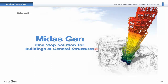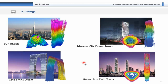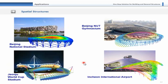Looking at the applications of Midas Gen, we see Burj Khalifa, which was used for column shortening analysis. Moscow City Palace Tower was completely analyzed and designed in Midas Gen. Gate of the Orient and Gangsa Twin Tower are other examples. For spatial structures, applications include Beijing National Stadium, Beijing UT Gymnasium, John Jo Wynn World Cup Stadium, and Shion International Airport.